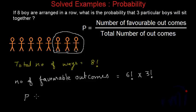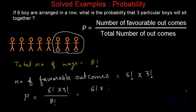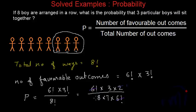So what will be the probability? The probability that these three people sit together will be six factorial multiplied by three factorial divided by eight factorial. This simplifies: six factorial cancels, giving three factorial divided by eight multiplied by seven, which is three divided by 28. So the probability that three particular boys sit together when arranging eight boys in a row is three by 28.